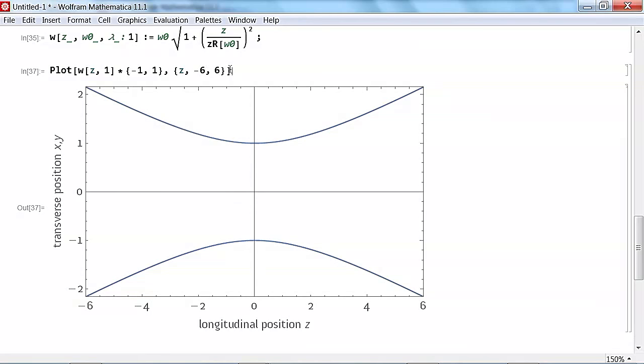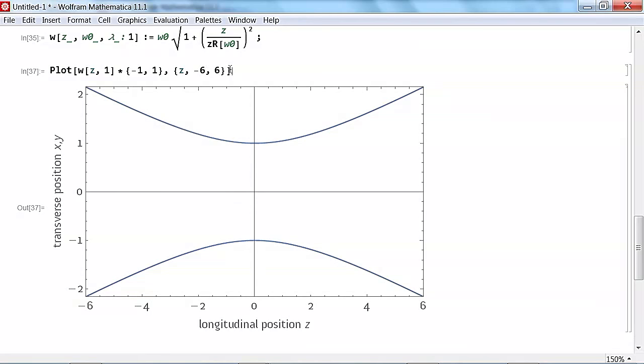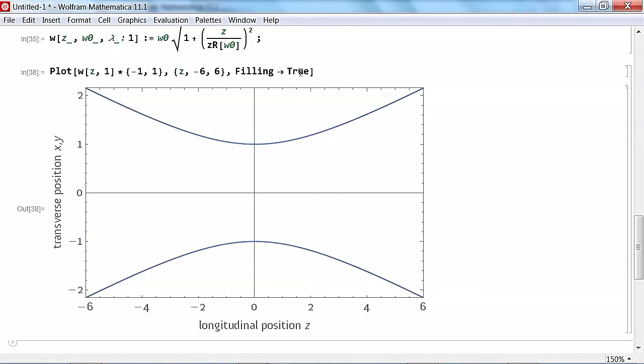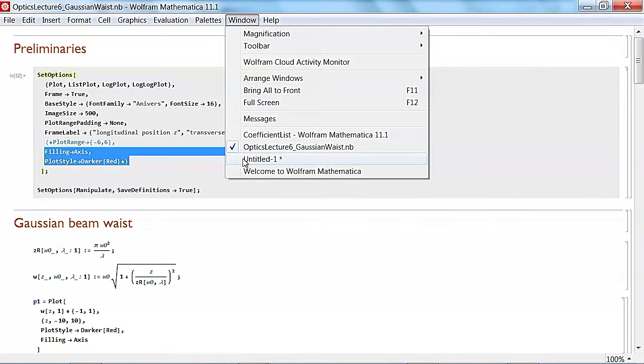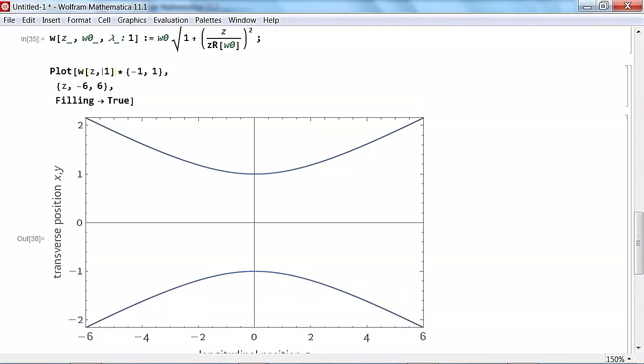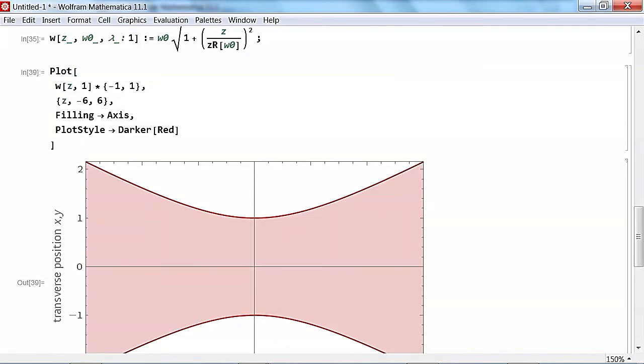That's looking kind of like my drawing now, but we can do a little bit better than that. And we're going to go filling true. Filling axis. We're going to use this syntax here. So now's the time where Mathematica has gotten sufficiently complicated that I should press carriage return to get a new line. Now we've got something that looks a lot like a laser beam.